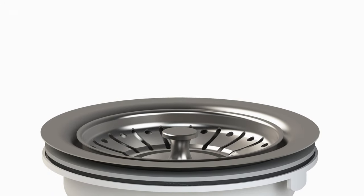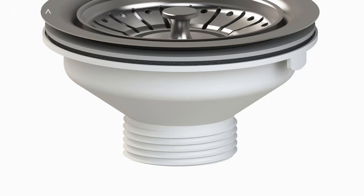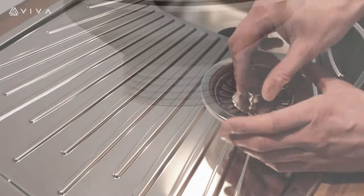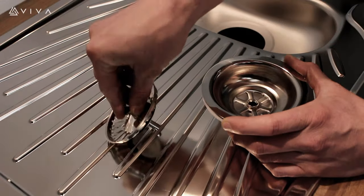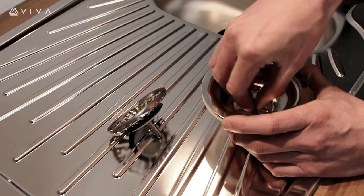This video demonstrates how to install our range of kitchen sink basket strainer wastes. Firstly, remove the strainer plug and unscrew the bolt in the centre of the waste.